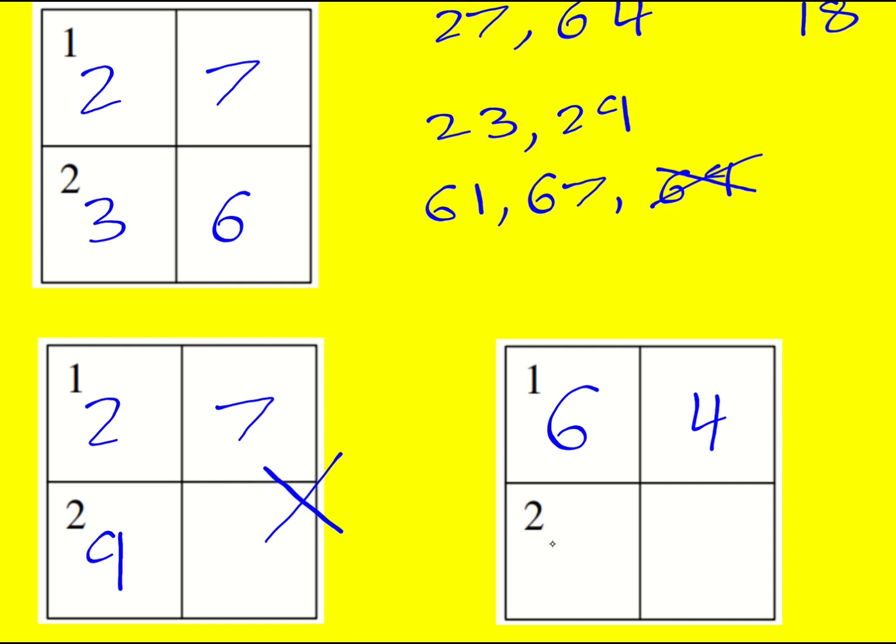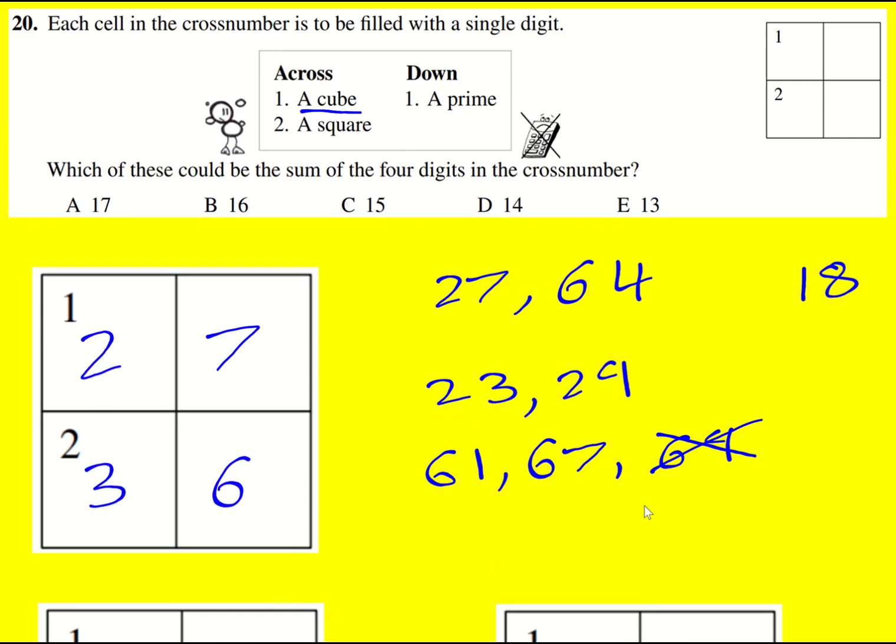For 67, there's no square number that starts with a 7, so it's got to be 61 if it's going to work. Then the only two-digit square number that starts with a 1 is 16. When we add the digits, 10 plus 7, the answer here is 17. Of interest, there are actually two options, 17 and 18, but 17 is the one that's on here.